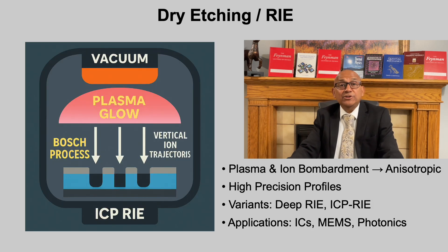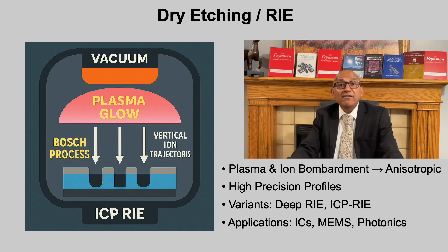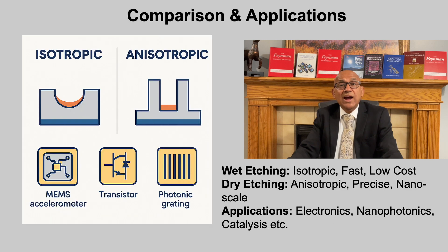Dry etching uses plasmas and ion bombardment to achieve anisotropic, controllable profiles. In plasma etching, reactive neutral species chemically attack the surface. In reactive ion etching (RIE), ions are accelerated toward the wafer by an electric field, physically sputtering atoms and assisting chemical reactions at the surface. Variants such as deep RIE, also known as the Bosch process, create high aspect ratio trenches, while inductively coupled plasma RIE allows higher plasma densities and precise depth control. Dry etching provides the resolution and verticality needed for integrated circuits, MEMS and nanophotonic structures, though it involves high equipment cost and potential ion-induced damage.